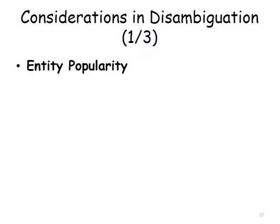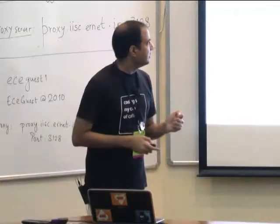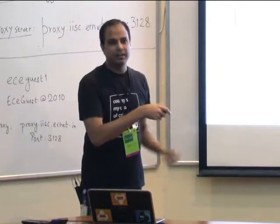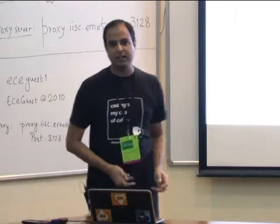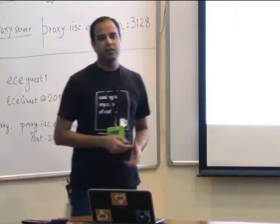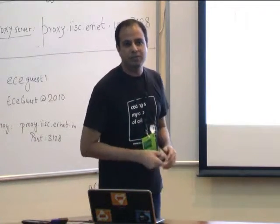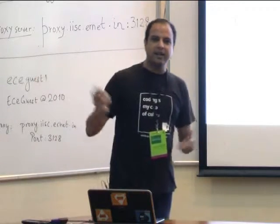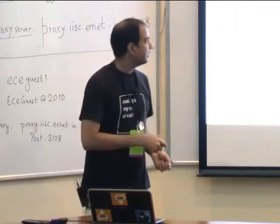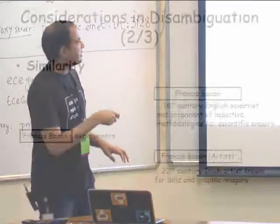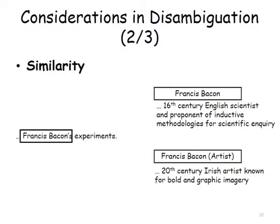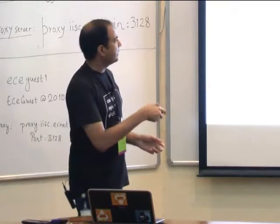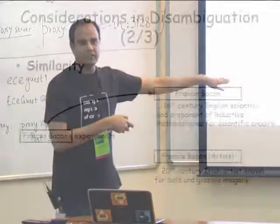Supervised algorithms need features. The first feature is entity popularity: if 'William Clinton' appears somewhere, with high probability it should link to the famous Bill Clinton. Entity popularity doesn't help in cases like Apple, where both the fruit and the company are equally popular. The second feature is similarity: how similar is the mentioned text to the entity name? For example, if there's a very similar string versus one with a larger edit distance, you'd prefer the highly similar one.